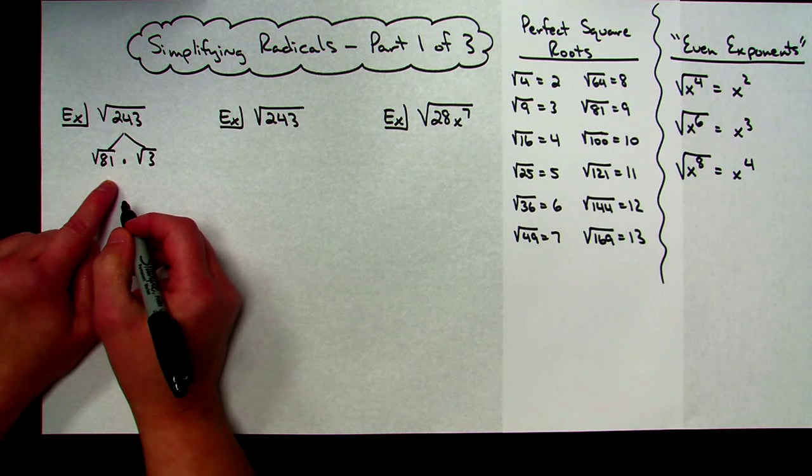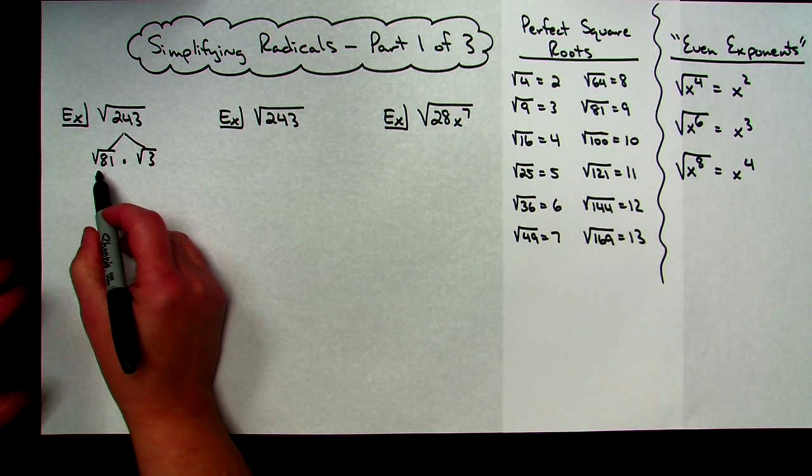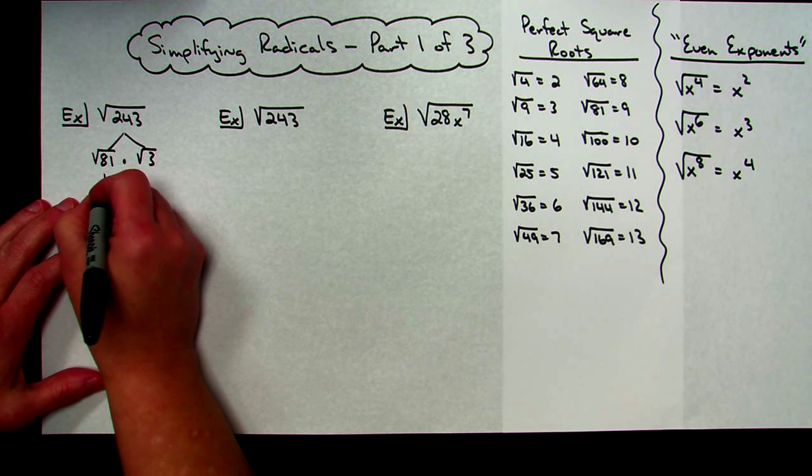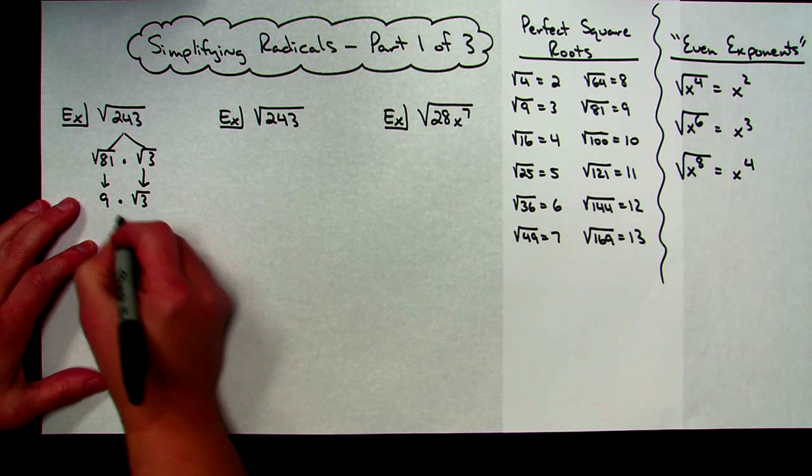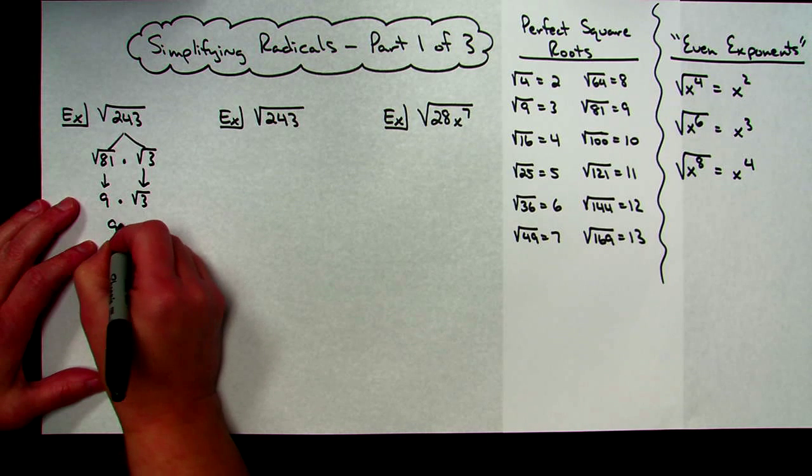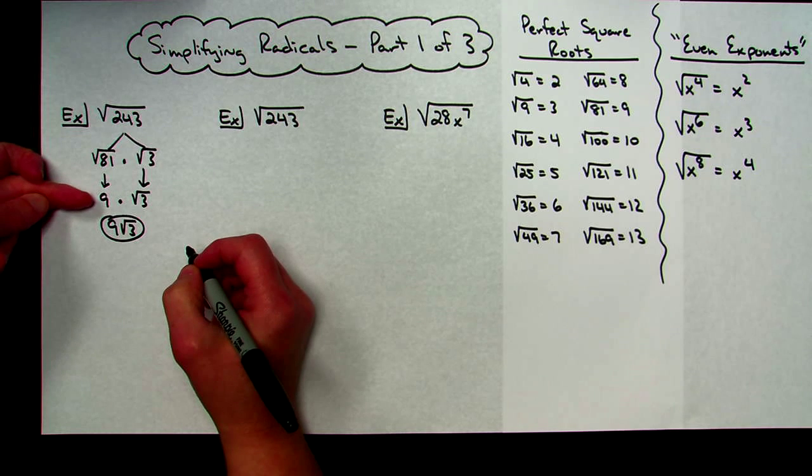So square root of 81 times square root of 3. And I always want to write that perfect square root first, because then I can say, square root of 81 is 9. And square root of 3 is simplified as far as I can. So 9 radical 3 is going to be my answer there. So my tree turned out to be relatively short. It was just two little lines.